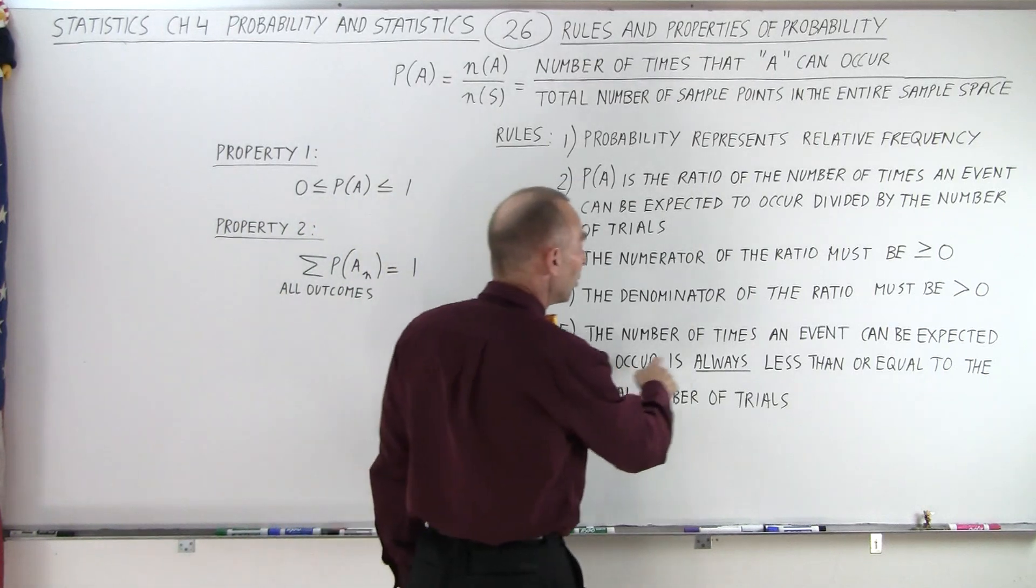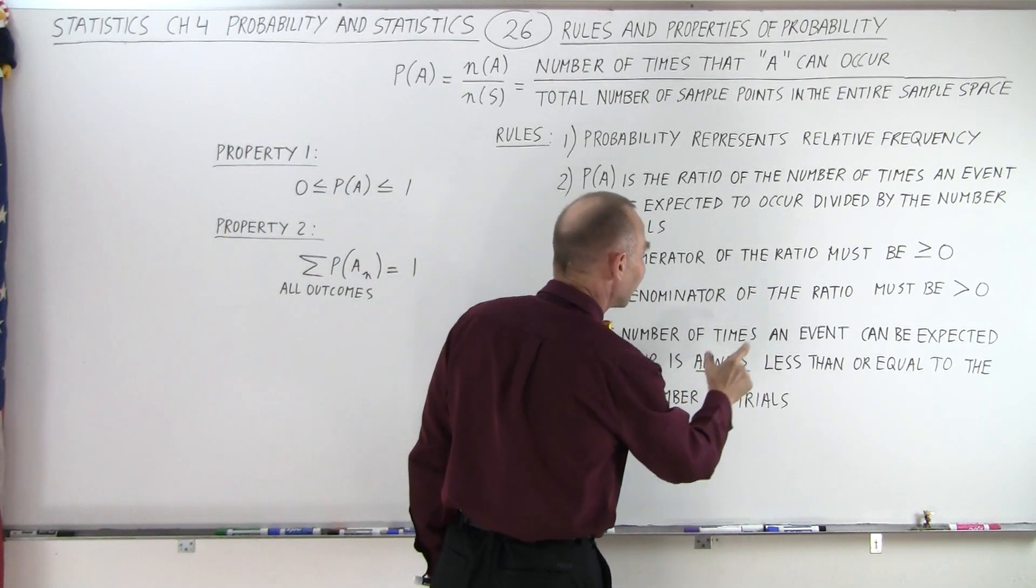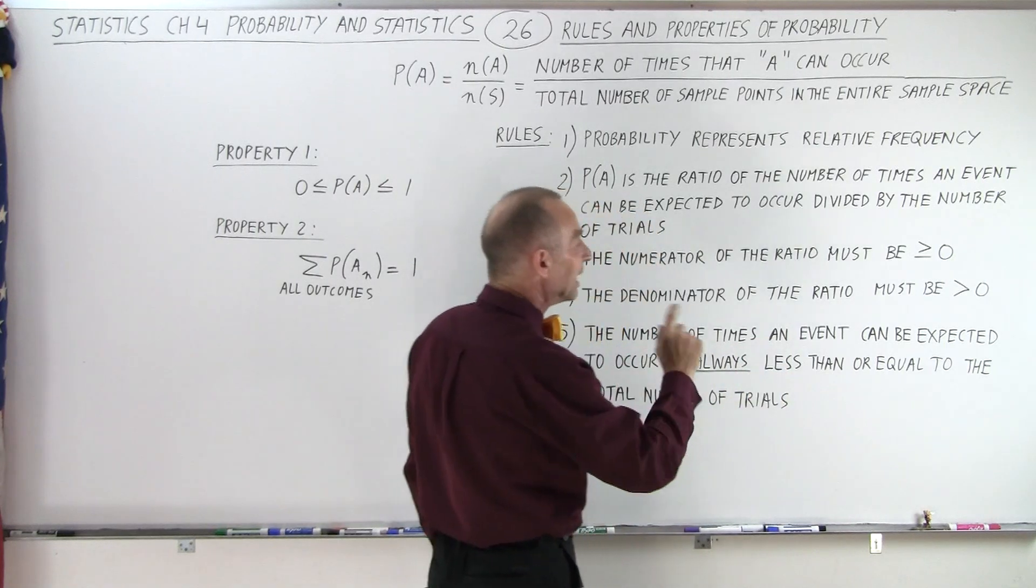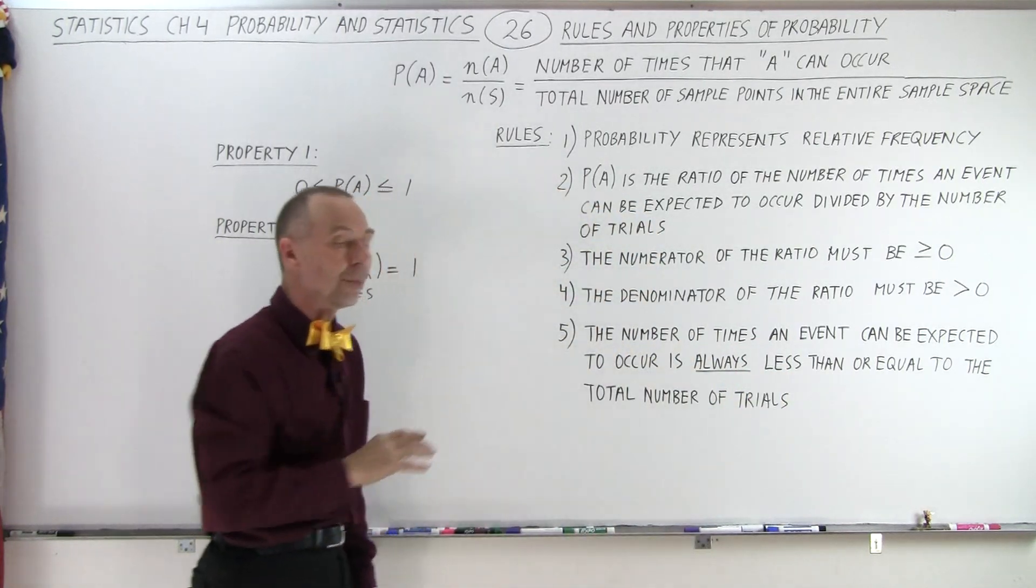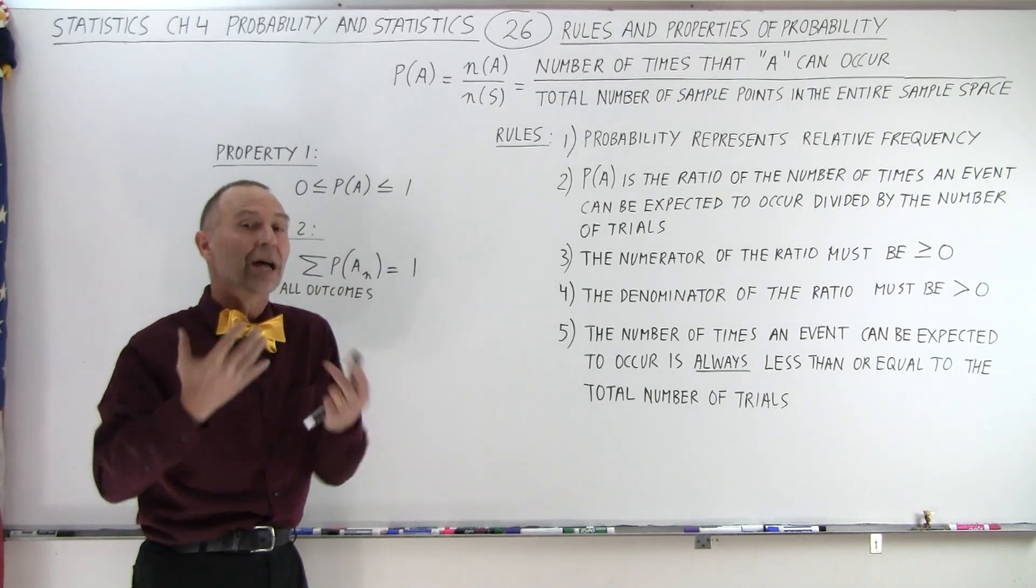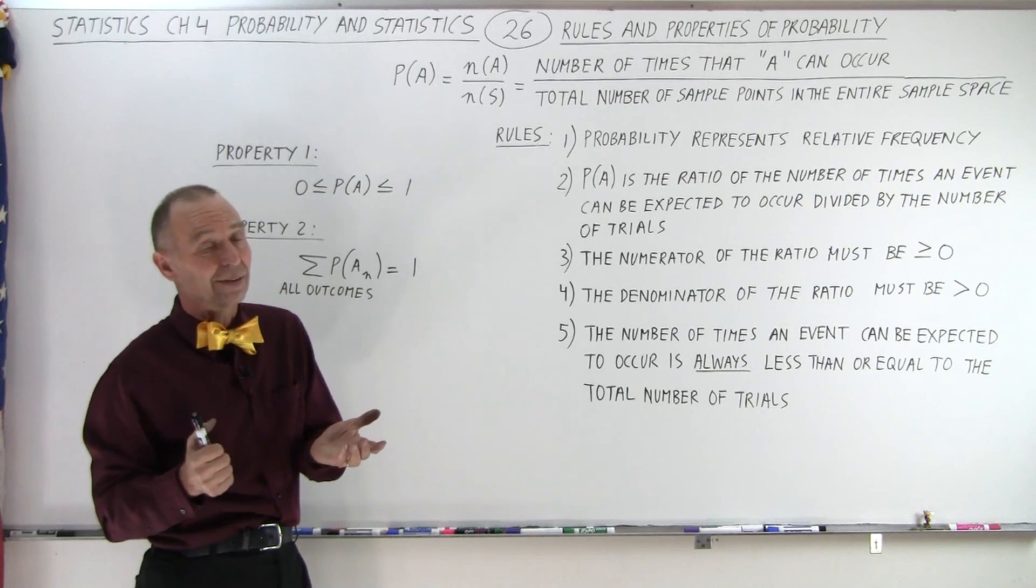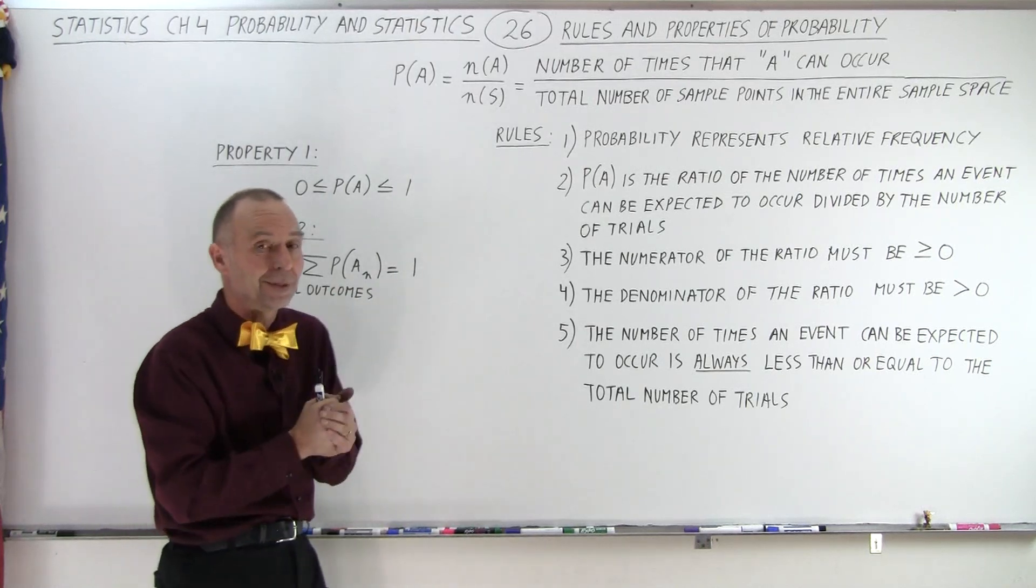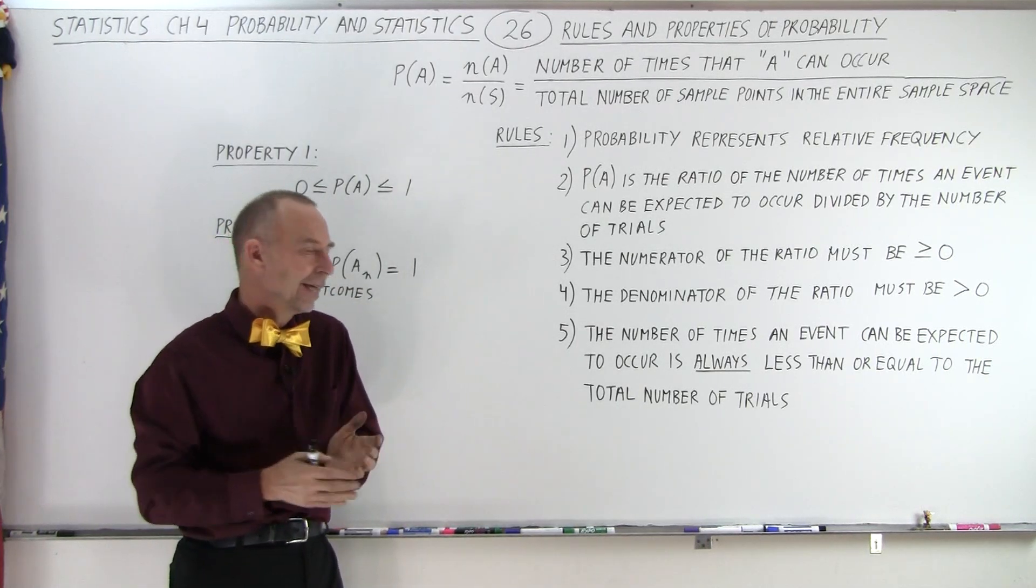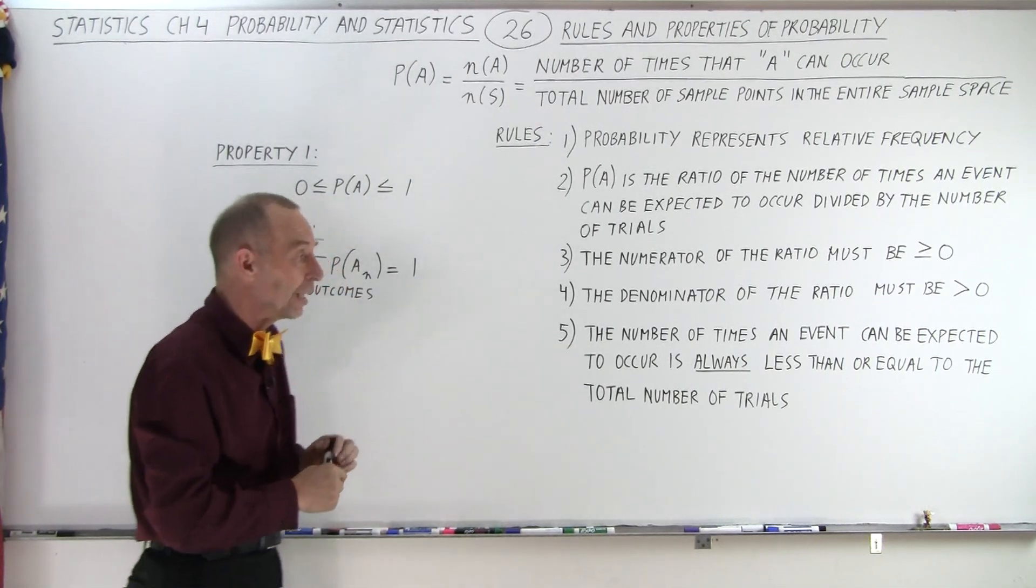And last, the number of times an event can be expected to occur is always less than or equal to the total number of trials. So you cannot expect that you'll have more outcomes than the number of trials. That is not possible. You might say that seems pretty reasonable. Yes, it is, and it's just good to be able to look at it and say that makes sense. We should not violate those rules.